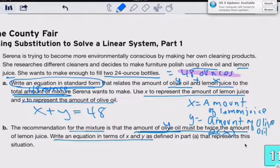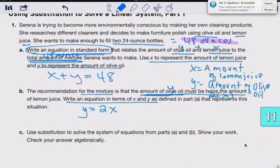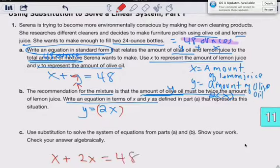Write an equation in terms of X and Y defined in part A that represents the situation. We know that Y, the amount of olive oil, is going to equal two times the amount of lemon juice. Use substitution to solve the equations from parts A and B. That's easy enough. Substitute Y into this equation here. X plus 2X equals 48. So our equation is X plus Y equals 48 and Y equals 2X.